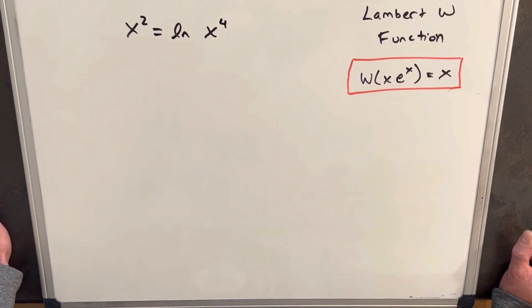Hey, so we have got this challenging looking problem on the board. We have x squared equals ln x to the fourth. I'm going to try to solve this with the Lambert W function.